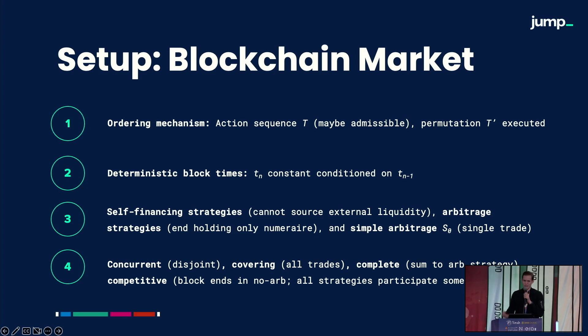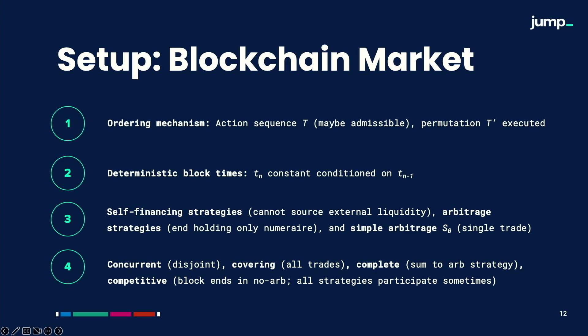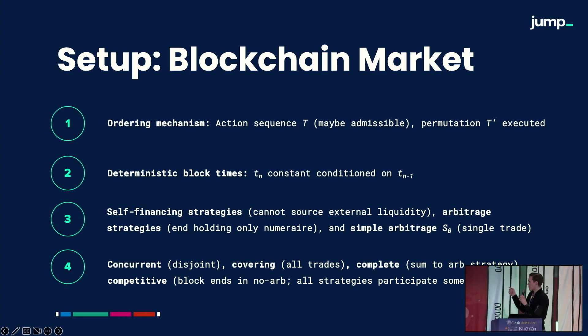Step two: the blockchain market. This is the consensus process. There is an ordering mechanism, some theoretical sequence of actions T — not necessarily admissible. Then, according to a probability distribution, some actual admissible permutation of these transactions will be selected, so in the end we'll get a block, and that's our T prime. We assume deterministic block time, which is the state of affairs in Ethereum. Self-financing strategies means we can't source external liquidity — anything a strategy has must be fueled by its prior positions. We have arbitrage strategies which end up holding only the numeraire, and a simple arbitrage strategy that executes a single trade, essentially waiting until the end of the block to execute the single most profitable trade.